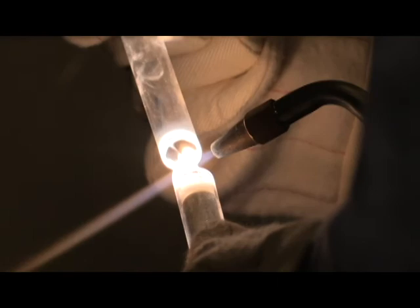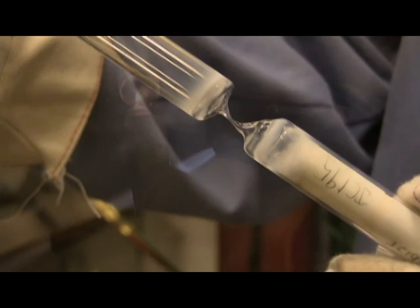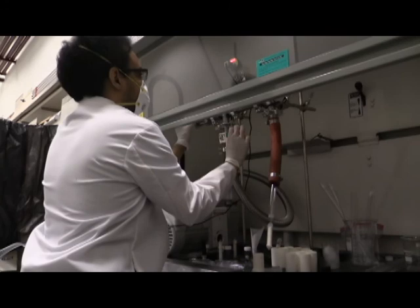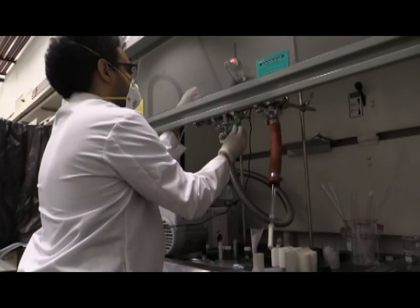This small opening allows us to evacuate all of the air out of the tube and then rapidly seal the tube so that our crystal is grown in a very low oxygen environment. This is essential because many elements react strongly with oxygen, especially at high temperatures.